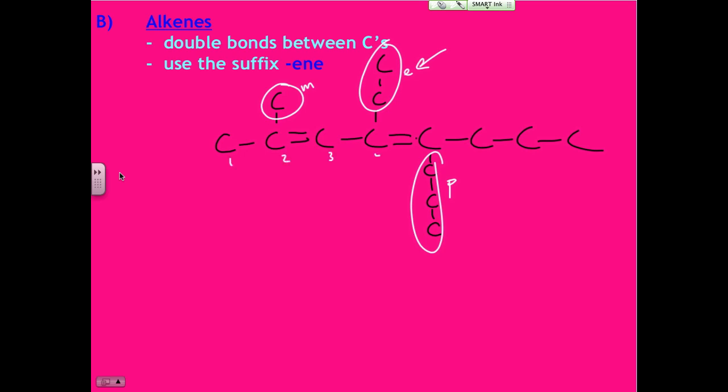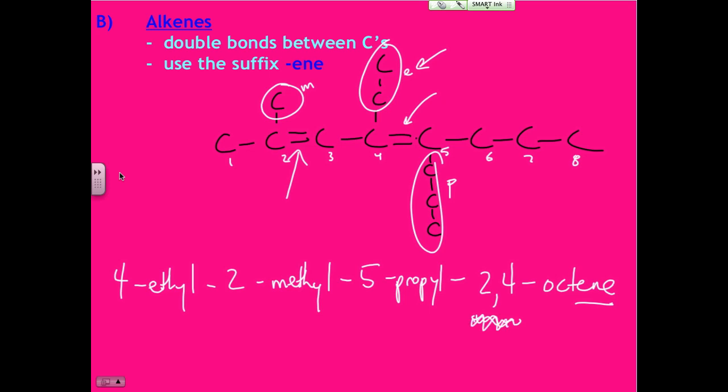So one, two, three, four, five, six, seven, eight. Off of the four, I have an ethyl. Off of the two, I have a methyl. And off of the five, I have a propyl, and then two, four tells me where the double is. Because octene, because we have double bonds. So we just put that two, four. So the only difference between an alkene and an alkane is we're going to have these numbers before the ending that tells me where the double bonds are.